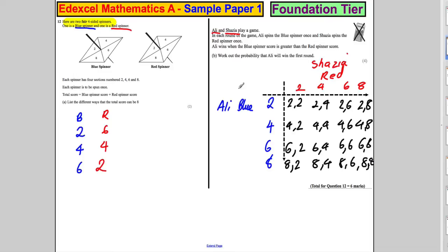Now in which of the cases will Ali win? He wins when he's got a bigger score than Shazia. Let's just highlight them - he's bigger there, there, there, and there, and here, here, here. That's 1, 2, 3, 4, 5, 6 winning outcomes.